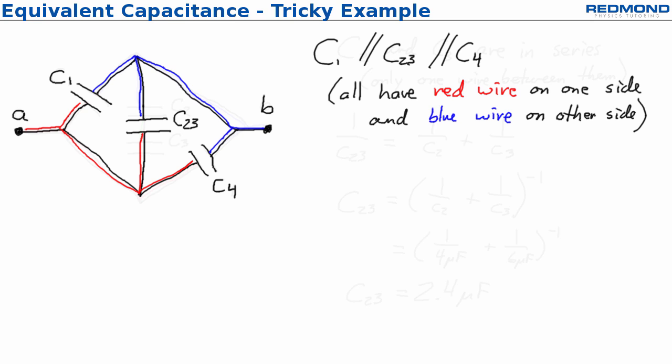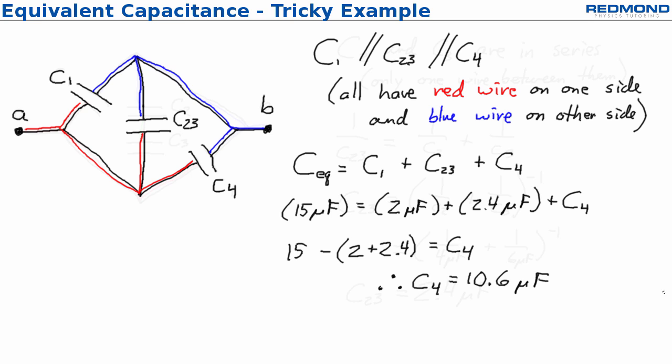When you have capacitors in parallel, it's really easy to add them up just like resistors in series. C equivalent for these three elements is just C1 plus C2,3 plus C4. Now I'm ready to substitute in. The problem told me that the equivalent capacitance from A to B was 15 microfarads and C1 is 2 microfarads and C2,3 is 2.4 microfarads. So I substitute and solve and I get that C4 is equal to 10.6 microfarads.